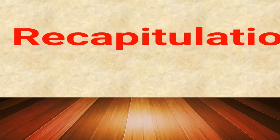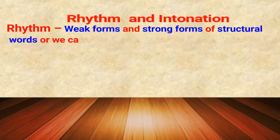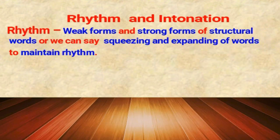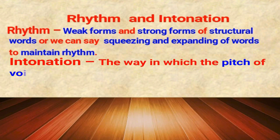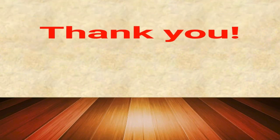In this module, we came to know about rhythm and intonation. Rhythm involves weak forms and strong forms of structural words — or we can say, squeezing and expanding of words to maintain rhythm. Intonation is the way in which the pitch of voice varies, making the intonation of a language — that is, falling and rising tone. Thank you.